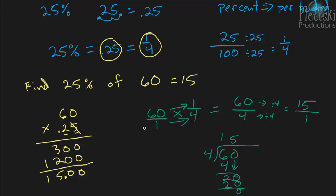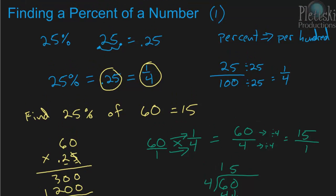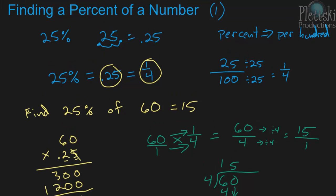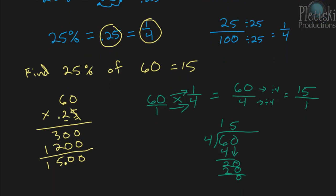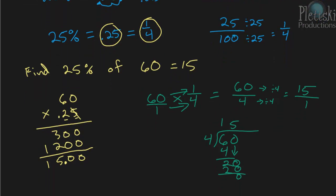And that's the same answer that we got by multiplying by the decimal. So that's how you find a percent of a number. And you can either multiply by the decimal or by the fraction. And in the next video, we'll see a couple other ways that questions may be phrased. And we'll look at some more examples.